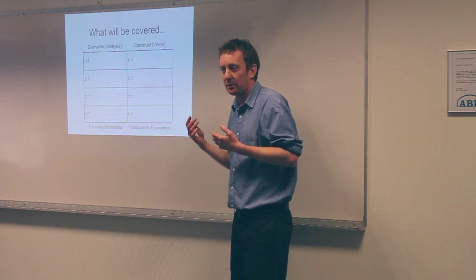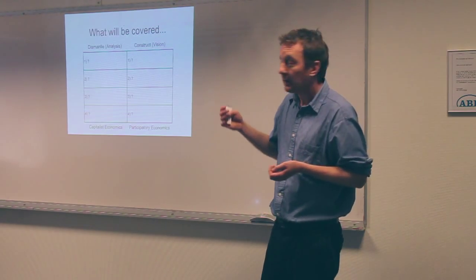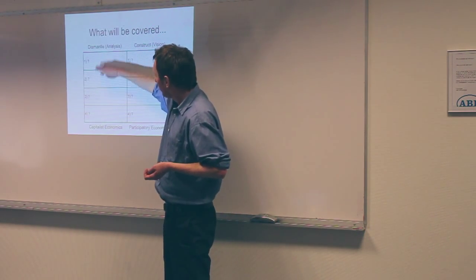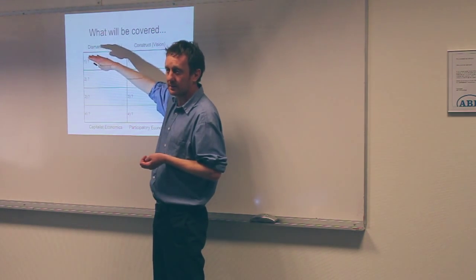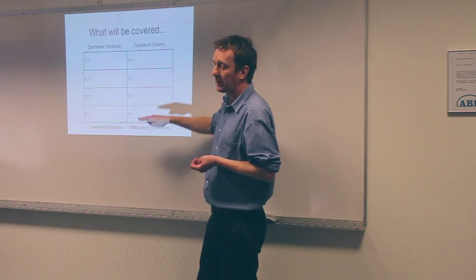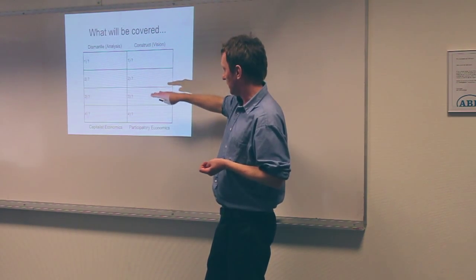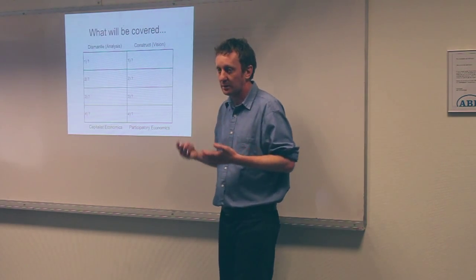To help us think more clearly about this, I've created a grid. On the left-hand side we've got our analysis, and we're going to identify four institutions that we want to organise to dismantle. On the right, we've got our institutions — four that represent the key institutions within a capitalist economy, and four that represent the key institutions for a participatory economy.